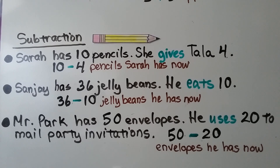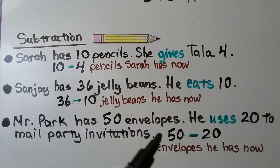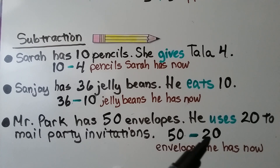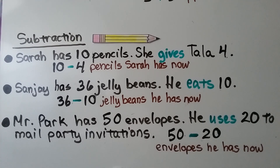Mr. Park has 50 envelopes and he uses 20 to mail party invitations. We have 50 minus 20 because he uses 20. That's the envelopes he has left now.